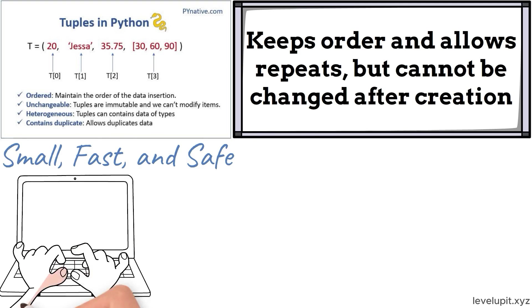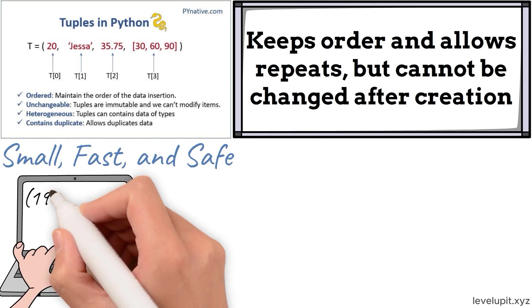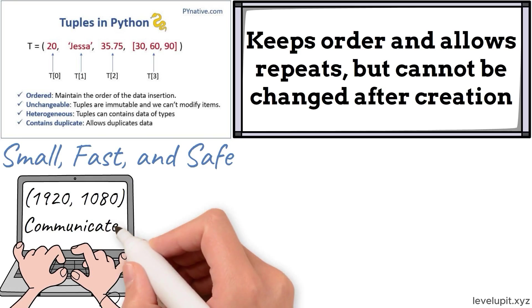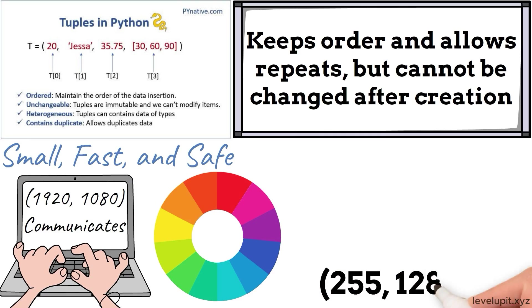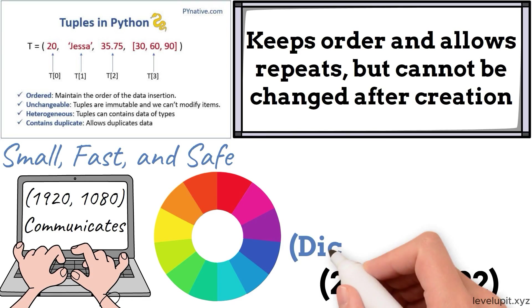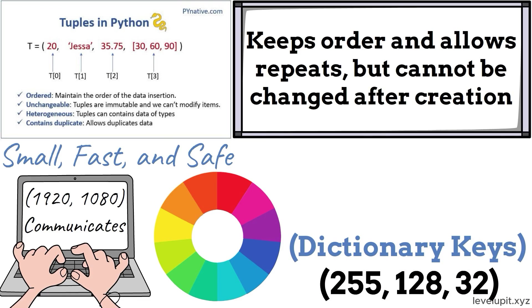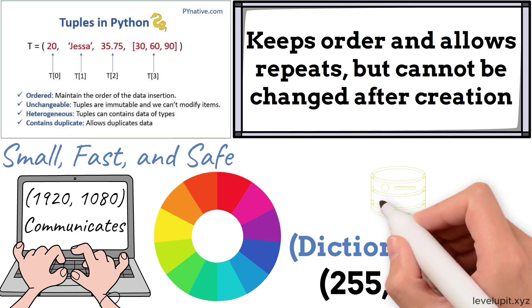If a function returns width and height, a tuple like (1920, 1080) communicates that these values belong together and will not change. If there's a color as RGB, a tuple like (255, 128, 32) works nicely.